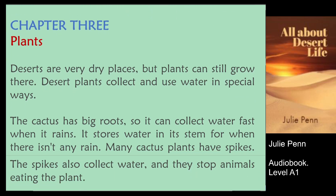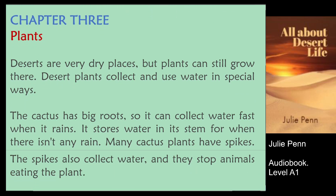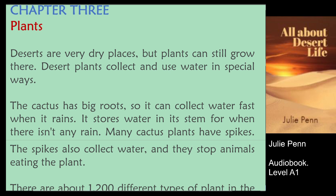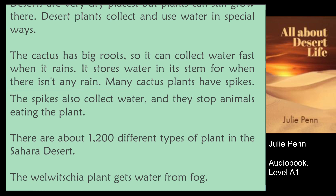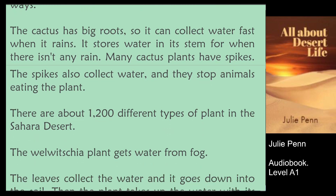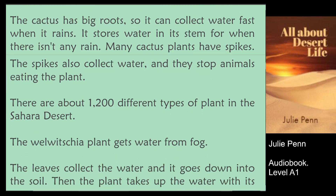Chapter 3: Plants. Deserts are very dry places, but plants can still grow there. Desert plants collect and use water in special ways. The cactus has big roots so it can collect water fast when it rains. It stores water in its stem for when there isn't any rain. Many cactus plants have spikes. The spikes also collect water, and they stop animals eating the plant.